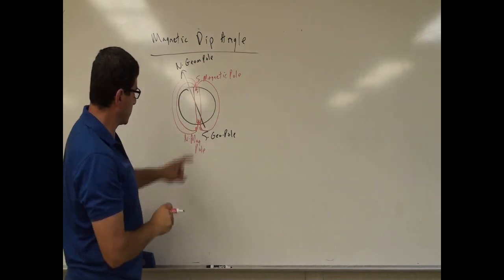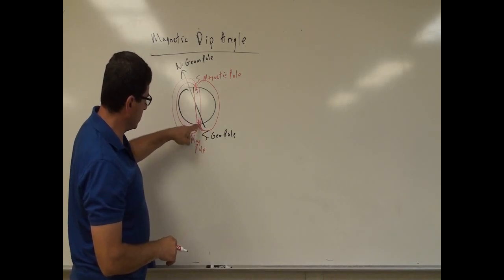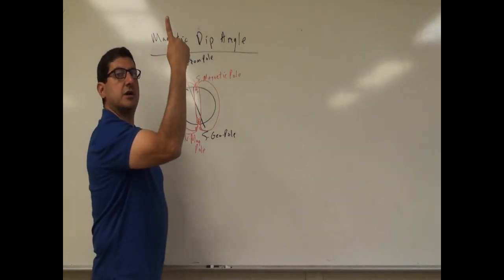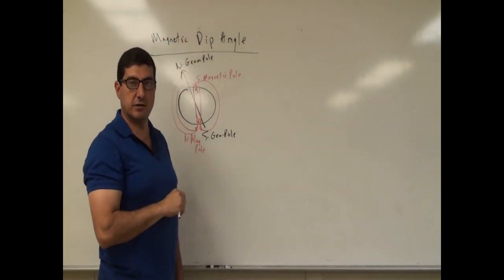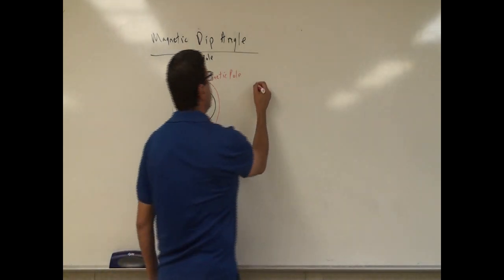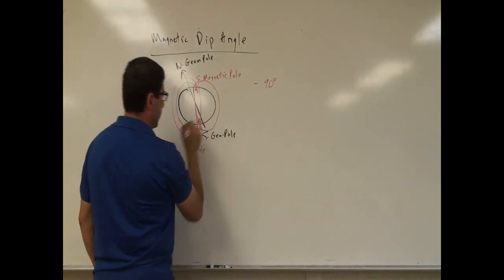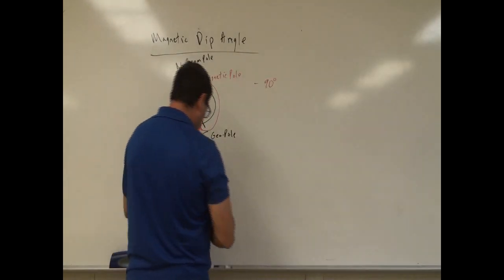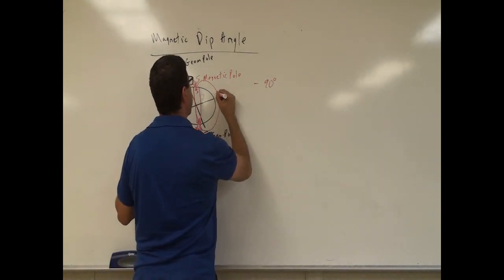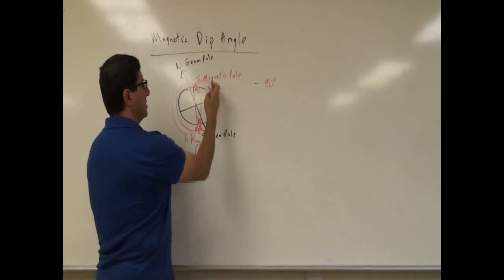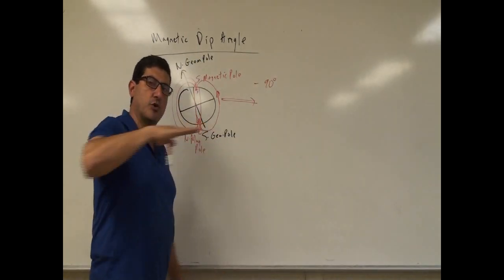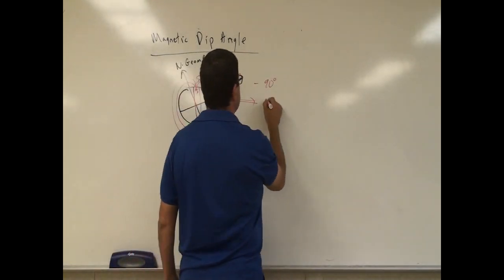Wherever the magnetic field lines are coming out — if you're at the North Magnetic Pole — the compass will point up from the ground. We call that the dip angle. Since it's going to be coming out of the ground, we call that a negative dip angle, negative 90 degrees. Now at the Earth's equator, the magnetic field lines are going to be parallel to the Earth, so the dip angle is going to be approximately zero — horizontal to the ground, zero degrees.